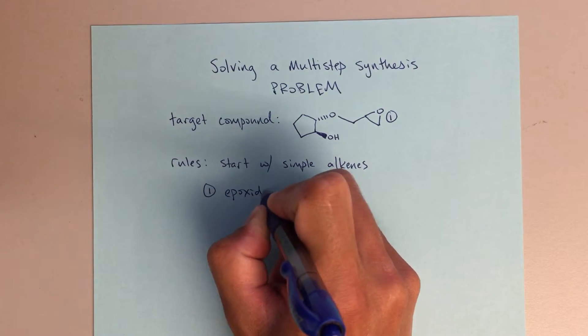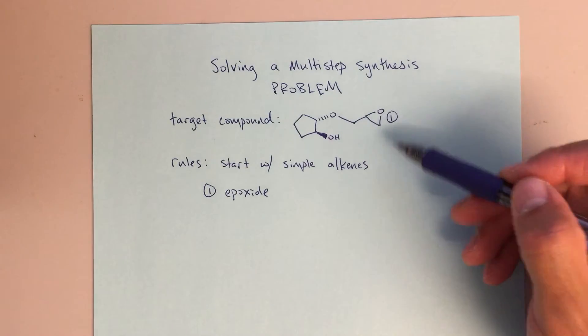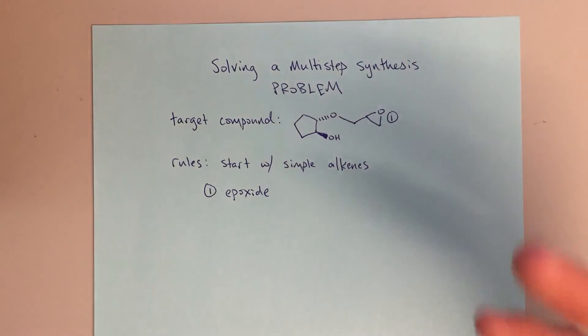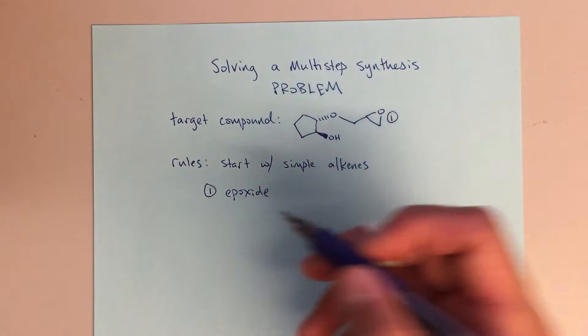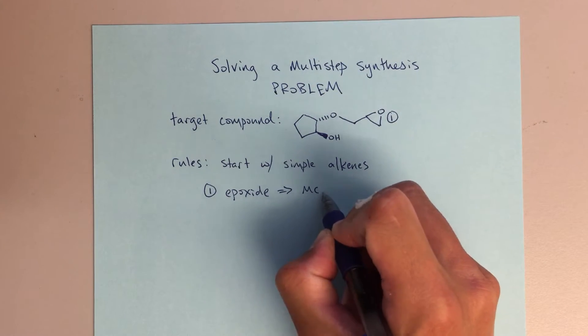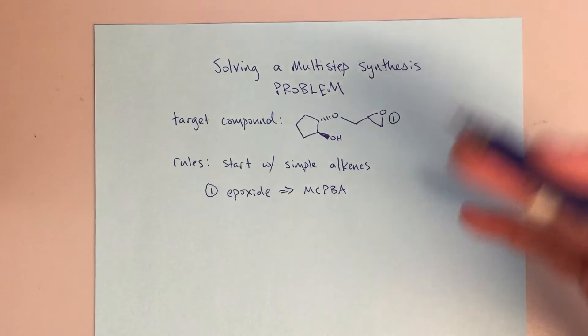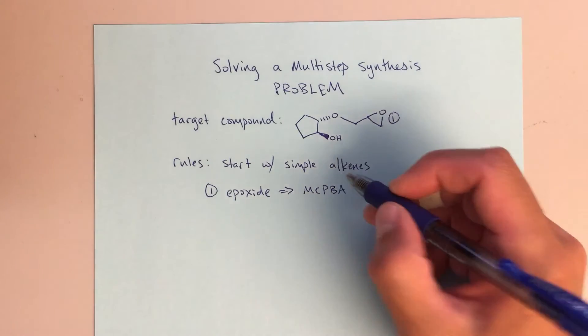That is very obvious, it's a unique looking three-membered ring with the oxygen there. Right away I'm saying, okay, if I've got an epoxide, I know that's going to be formed using MCPBA with some inert solvent.